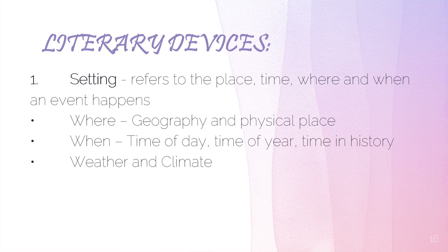Next are the literary devices we can use — the same ones used in creative writing. The first device is setting, which is the when and where of the story. 'Where' refers to the geography or physical place, and 'when' refers to the time, the day, and the time in history. We also include weather and climate, which define the atmosphere or mood of the story.